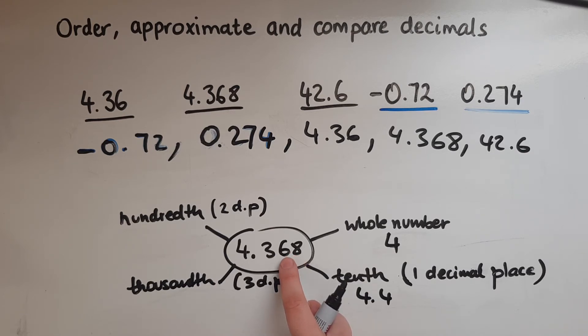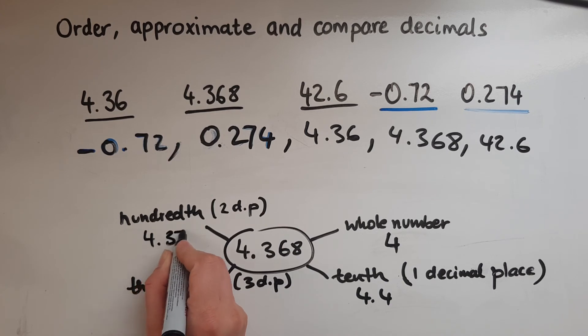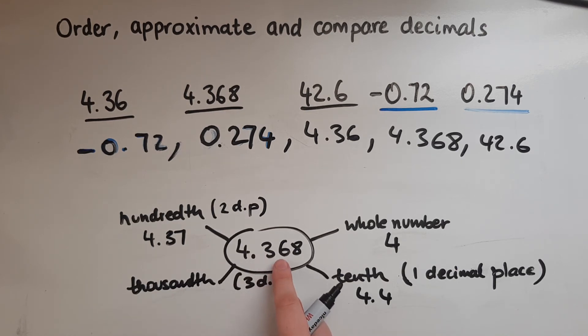So this means that this is going to be rounded to 7, so 4.37. And the thousandth, to the nearest thousandth, it's this digit that represents it. So we need a thousand of any one digit that is here to make a whole. So we round again to three decimal places.